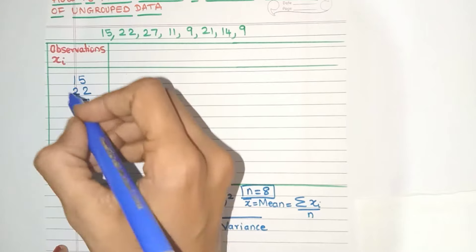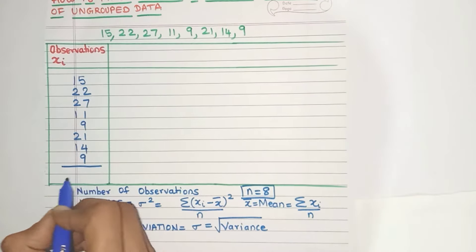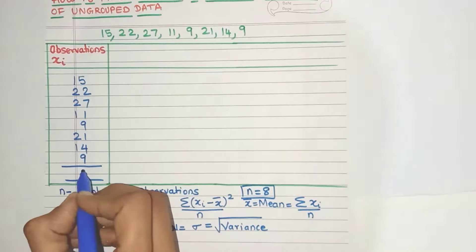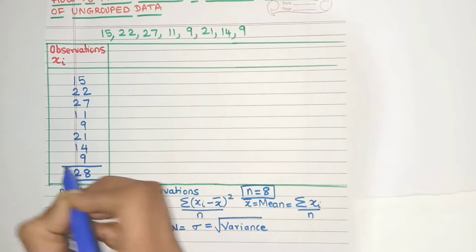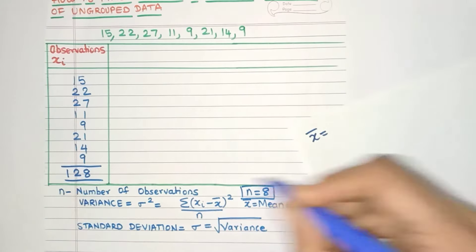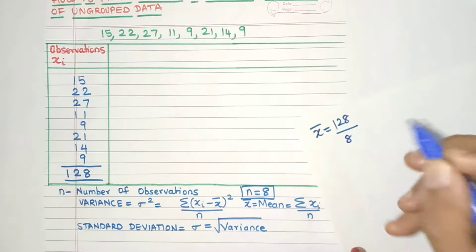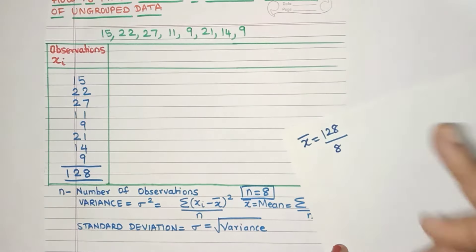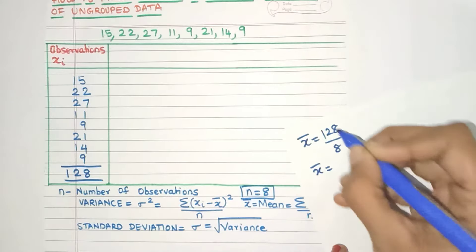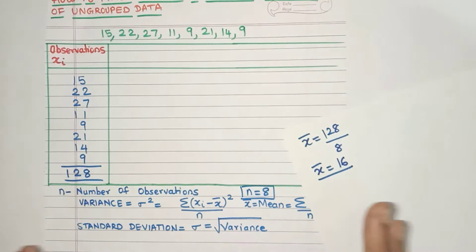And that's why we have to write one digit below the other so that it's easier to add. Now I've already done the addition just to save some time. Now it comes out to be 128. You can check it out. Now let's calculate the mean value. So mean is nothing but Σxi which is 128 divided by n which is 8. Now I think it will directly go in 8 table, right? Yes, it will go. So this will come out to be 16. So the mean of this data is 16.